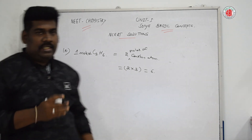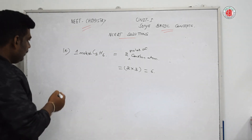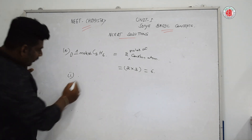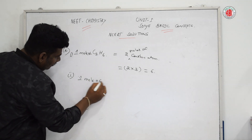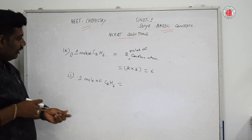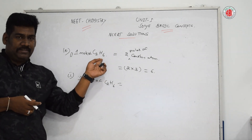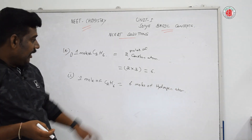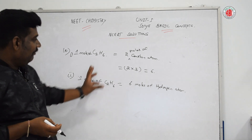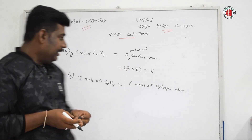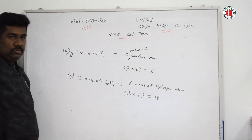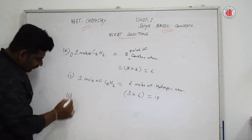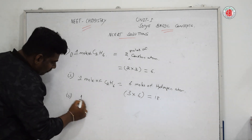Next, number of moles of hydrogen atoms: one mole of C₂H₆ contains six moles of hydrogen atoms. Therefore, number of moles of hydrogen atoms in three moles = 3 × 6 = 18 moles of hydrogen atoms.